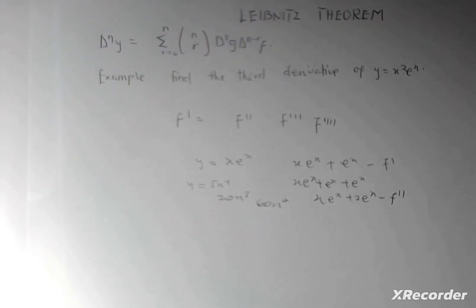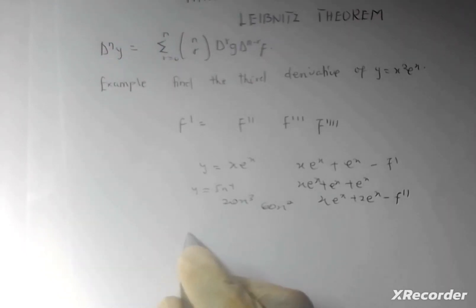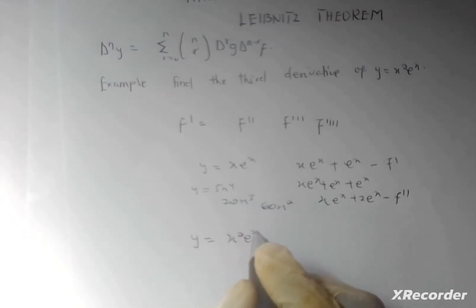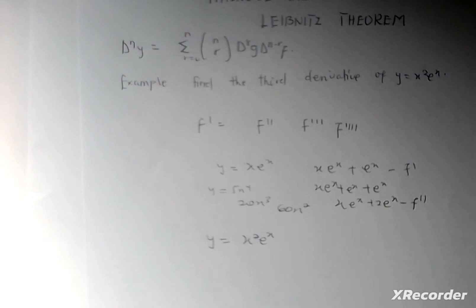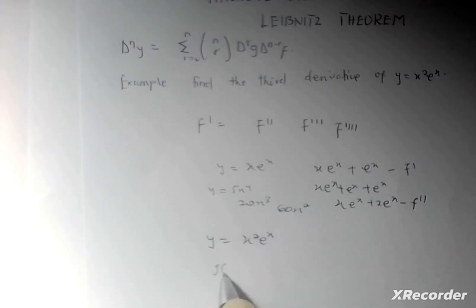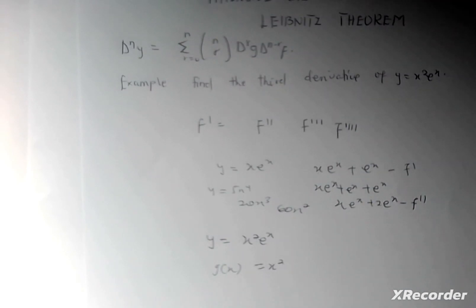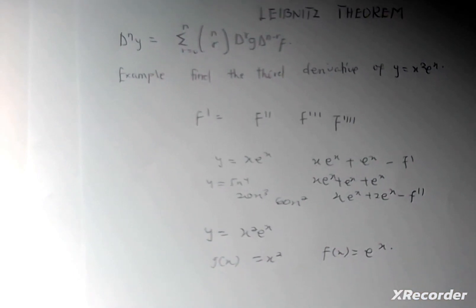Let's take an example to see how we go about this. Find the third derivative of y = x²e^x. So how do we go about this? You are finding the third derivative, meaning you have to find the first, second, and third. Applying the Leibniz theorem, you take g(x) = x² separately, and f(x) = e^x.